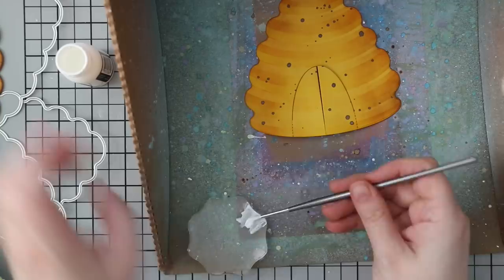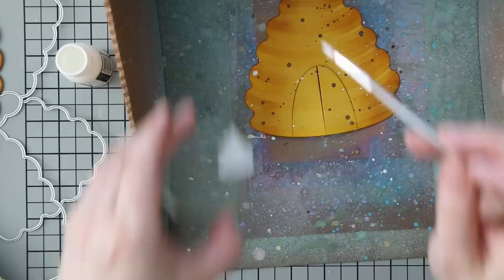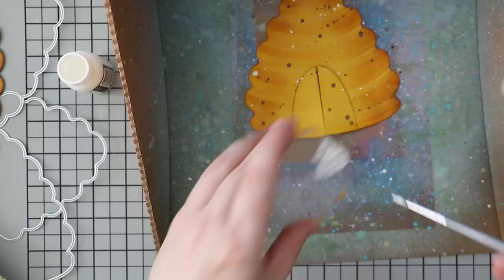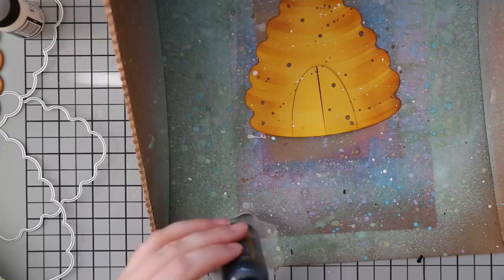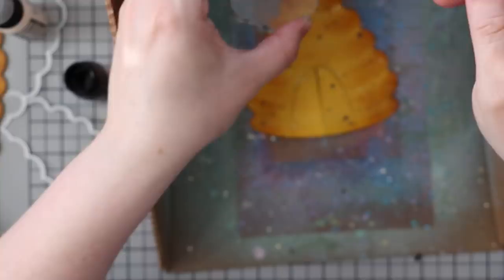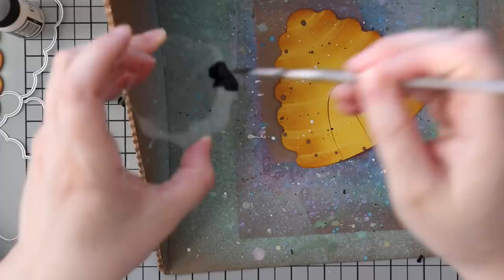I added some white splatter with Picket Fence distress paint. The distress paints are very liquidy, so you don't really need to water them down. However, just FYI, they do take longer than you'd think to dry. I did end up smearing some because I'm impatient. Then I used Black Soot distress paint and did the exact same thing. FYI, if you're not aware, distress paint is permanent, so wash your brush and tools because once it's dry, it's literally permanent.